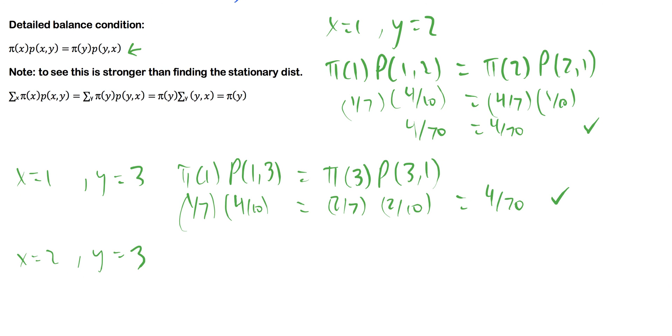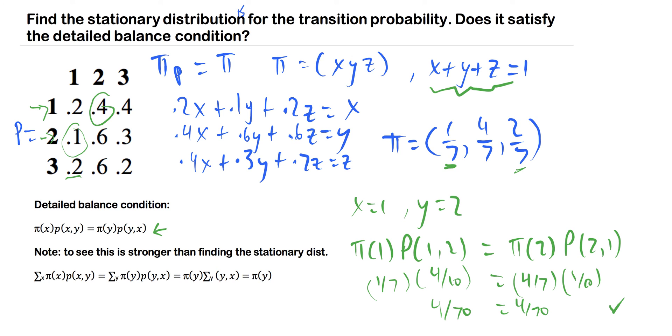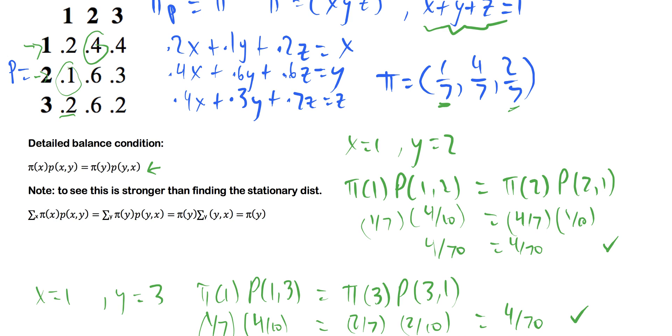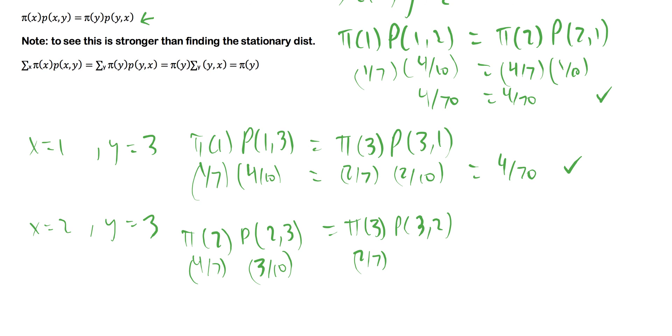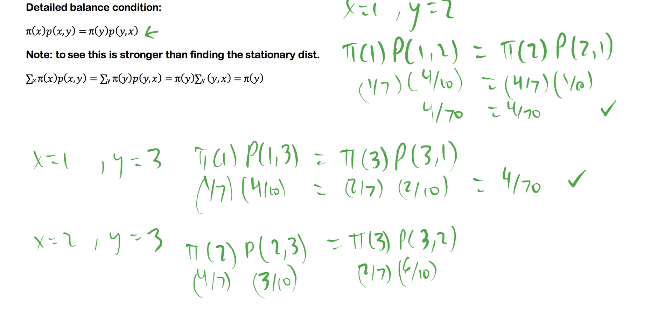So we want π of two, again, following this definition of the detailed balance condition times p from state two to three equals the long run probability for state three times getting from state three to state two. Now we know that state three is two sevenths. We know that state two is four sevenths. And this is from our long run distribution here, or it's also called stationary distribution. And then to get from two to three, we're looking at three tenths from our matrix there. And then to get back from three to two, it's six tenths. And we can see that these both equal 12 over 70. So that works.